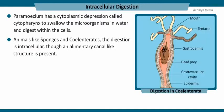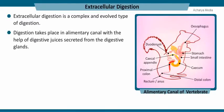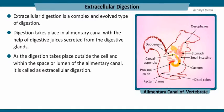Animals like sponges and coelenterates carry on intracellular digestion through an alimentary canal-like structure that has developed in them. Extracellular digestion is a complex and evolved type of digestion. Digestion takes place in the alimentary canal with the help of digestive juices secreted from the digestive glands. As digestion takes place outside the cell and within the lumen of the alimentary canal, it is called extracellular digestion.